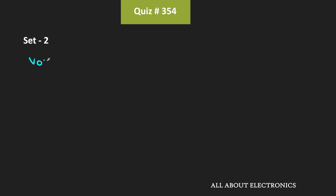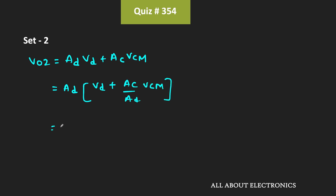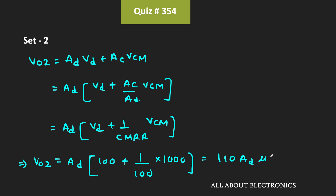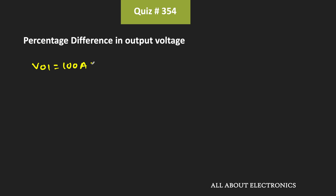The output voltage V02 = Ad times [Vd + (1/CMRR) times Vcm] = Ad times [100 µV + (1/100) times 1000 µV] = Ad times [100 + 10] µV = 110 · Ad µV. So for the second set of input signals, V02 = 110 · Ad µV. To summarize: V01 = 100 · Ad µV and V02 = 110 · Ad µV.